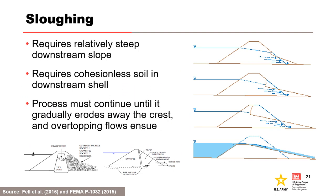Sloughing is the third internal erosion breach mechanism. For sloughing to occur, the downstream face would have to be relatively steep, and the downstream shell would have to be comprised of cohesionless soil — probably sandy gravel or gravelly sand, possibly with some silty fines. Increased seepage would have to discharge into the downstream shell for a concentrated leak in the core of a zoned embankment, or for internal erosion in the foundation. The over-steepening and progressive slumping process would have to continue until it gradually eroded away the crest and allowed the reservoir to overtop the embankment. Sloughing is a slowly developing breach mechanism, taking days or weeks to lead to breach.